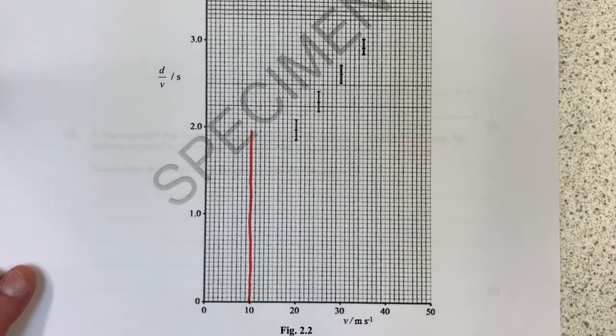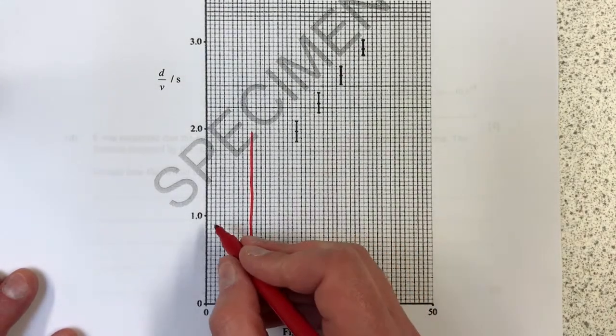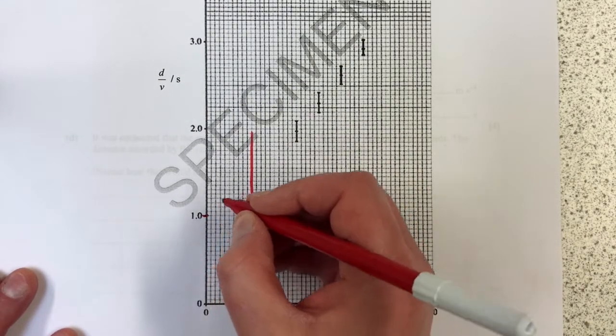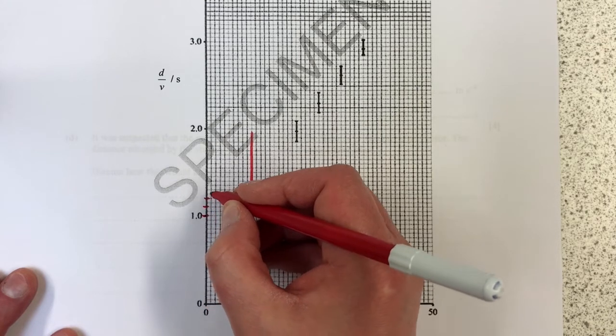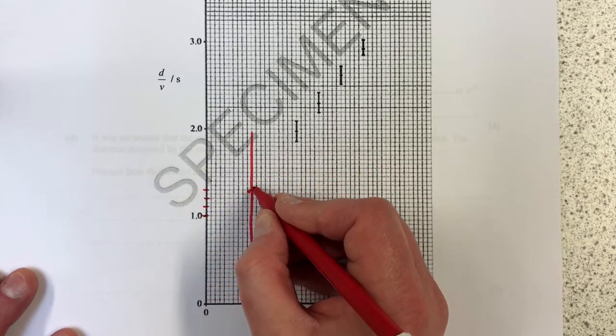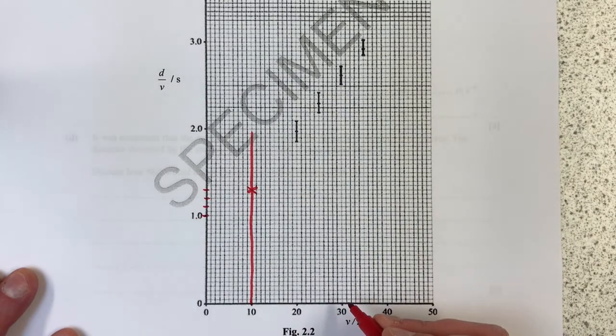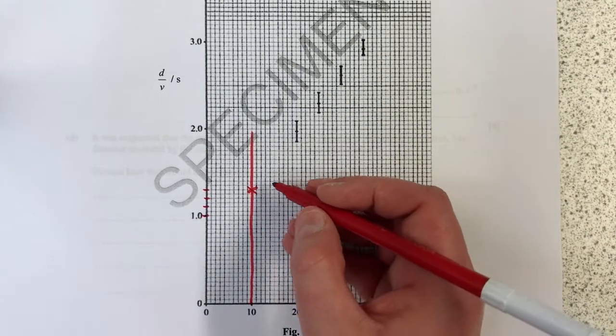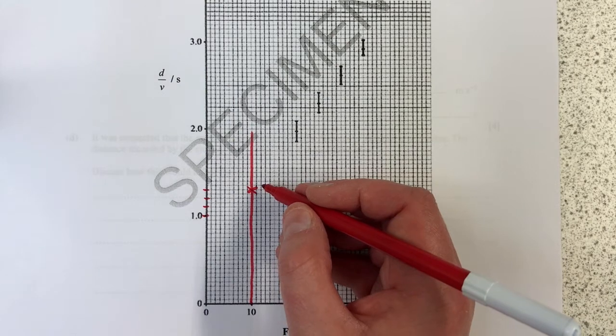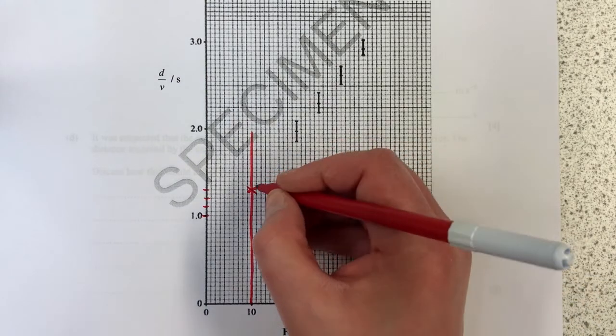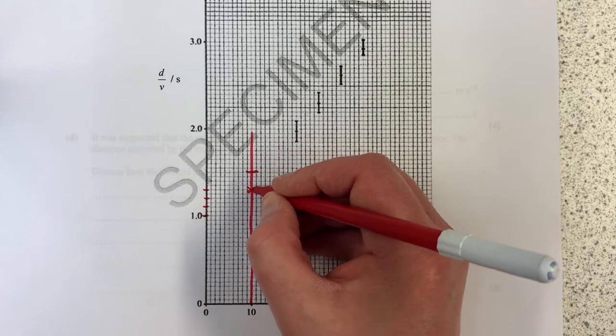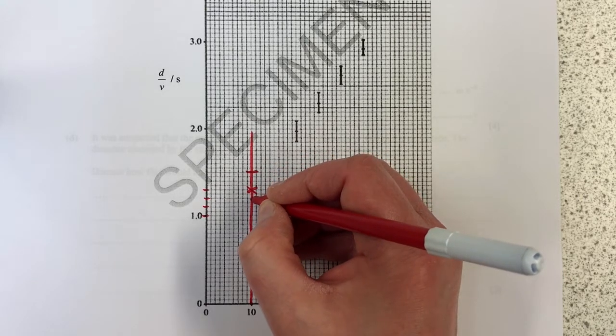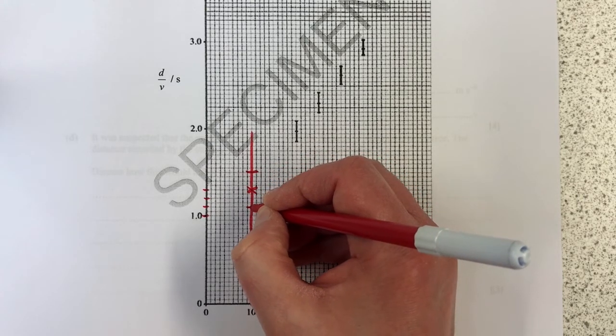So I need to, if I do the 10 one first, graph my way a line up from number 10, and I need to cut it off at 1.3. So that's 1.1, 1.2, 1.3, so that's where my point is going to have to be plotted. And I need to do a plus or minus 0.18, I'll have to round that to 0.2, which is going to be 4 squares either side.